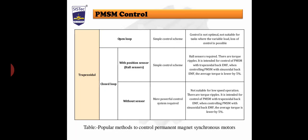The drawback of direct torque control is high torque and current ripple. Moving on to trapezoidal control, this is also divided into two categories: open loop control and closed loop control. In open loop control, the advantage is a simple control scheme. The drawback is that control is not optimum, not suitable for tasks with variable load, and loss of control is possible.